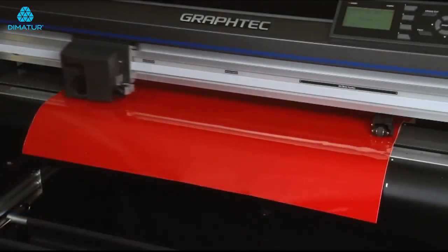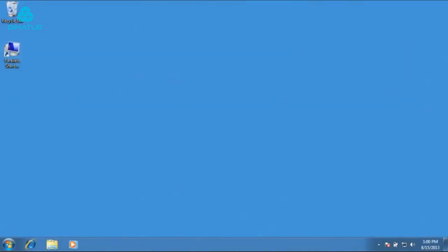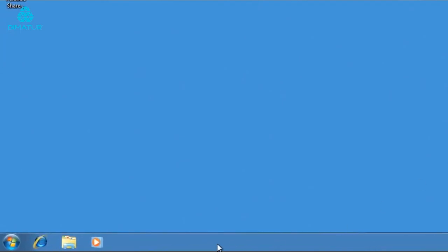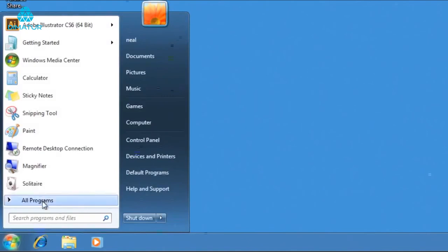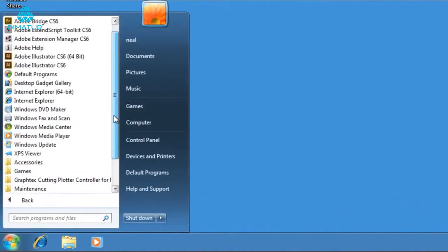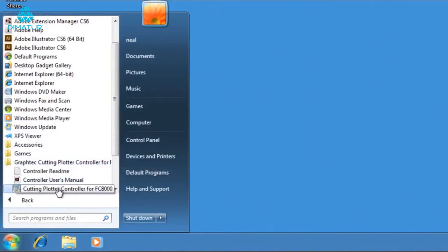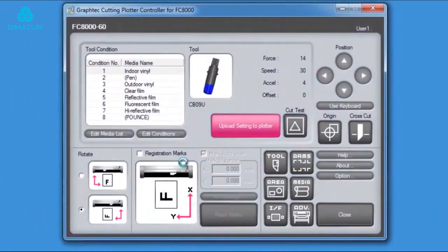After the cutter initializes, the final step is to test the communications between the computer and the cutter by using the plotter controller to send a test cut. To open the plotter controller, click Start at the bottom of your PC window. Then click All Programs. Scroll down the list to find Graphtec Cutting Plotter Controller for FC8600. Click on the folder, and then click on the application. This will start the Cutting Plotter Controller, or Controller for short.